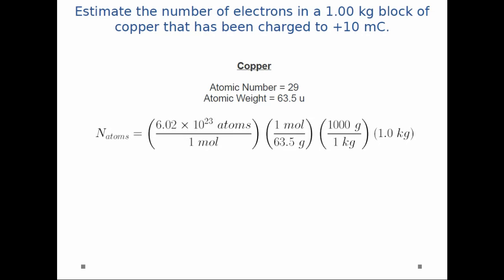Finally, multiply by the mass of my block, 1 kilogram. This should look familiar from introductory chemistry courses. When you plug in the numbers, you get 9.48 times 10 to the 24th atoms. If we want the number of electrons, we take the number of atoms and multiply by 29. There are 29 electrons per atom, so I get 2.75 times 10 to the 26th electrons.